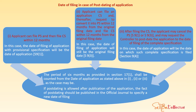Case 3: After filing the complete specification, the applicant cancels the provisional specification and requests the controller to post-date the application to the date of filing of the complete specification. In this case, the date of filing or date of application will be the date on which the complete specification was filed — referred to in Section 9(4). The 6-month period referred to in Section 17(1) will be counted from the date of application as determined in Case 1, 2, or 3. If post-dating is allowed after publication, the fact of post-dating will be published in the official journal with the new date of filing.